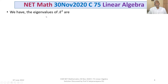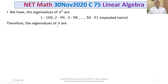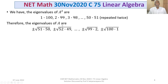The eigenvalues of A² are known and each is repeated twice. The eigenvalues of A are therefore ±√(1×100), ±√(2×99), ..., ±√(50×51). Since the trace of A equals 0, the negative square roots are confirmed as eigenvalues too. So the eigenvalues of A are ±√(51×50), ±√(52×49), ..., ±√(99×2), ±√(100×1).